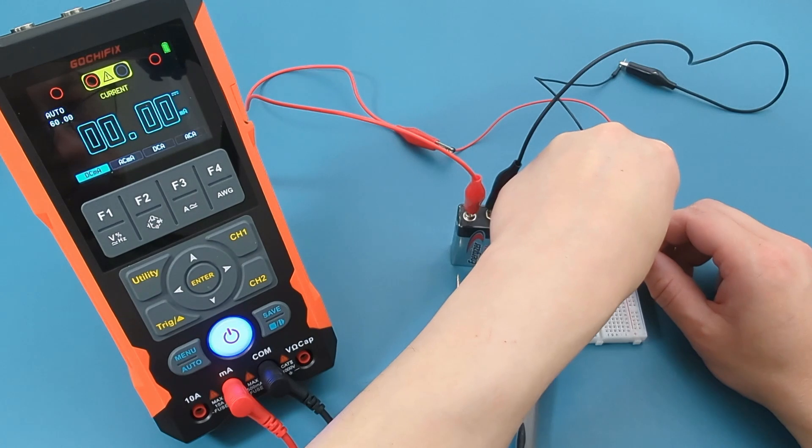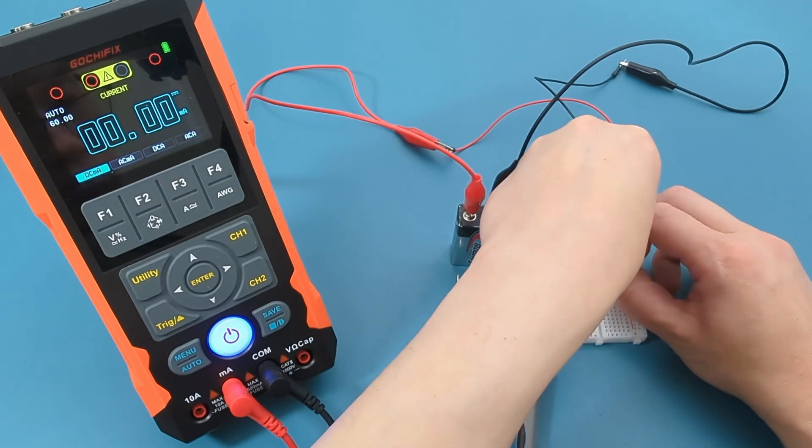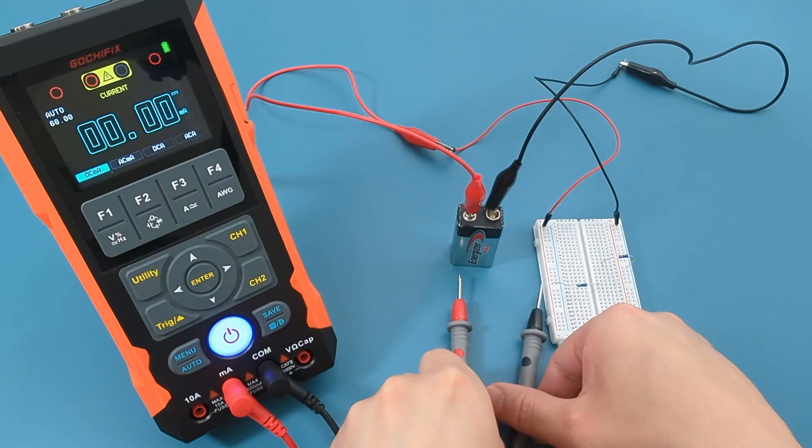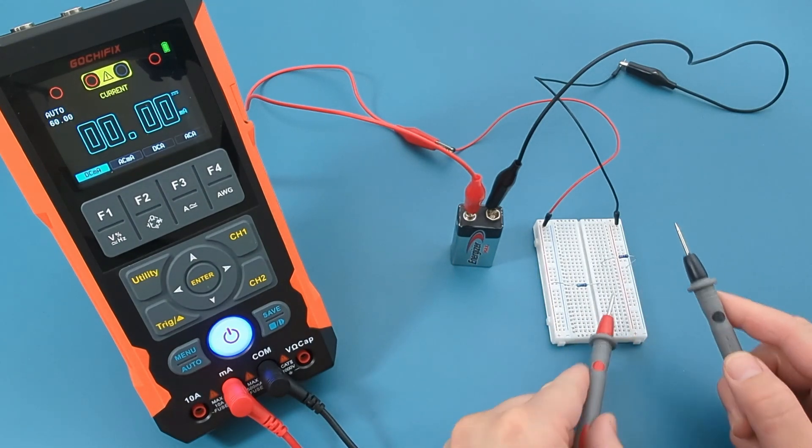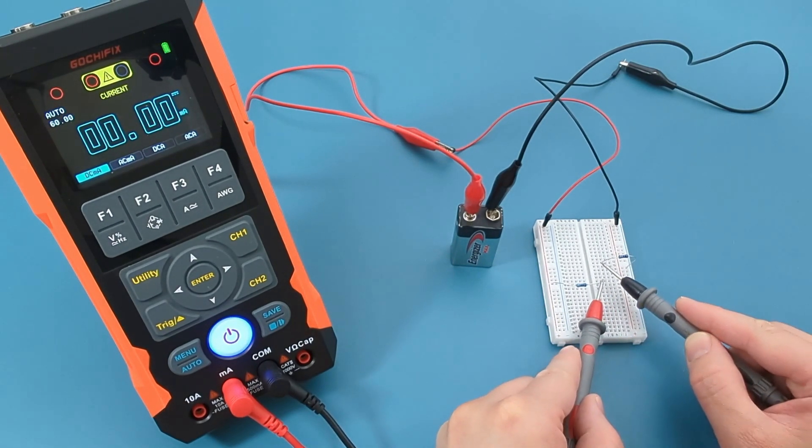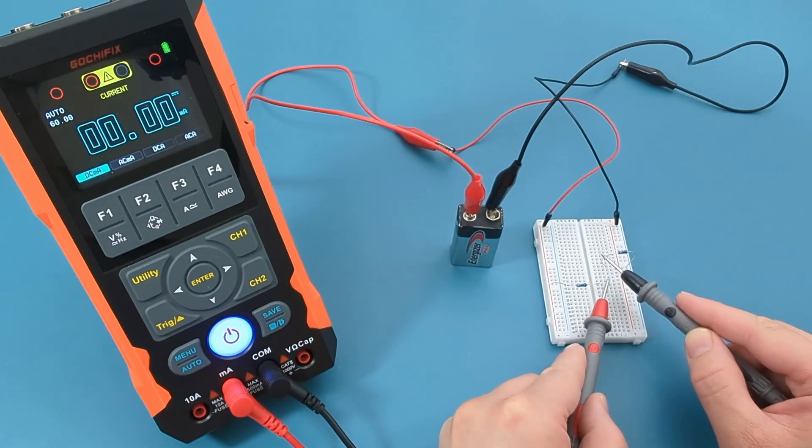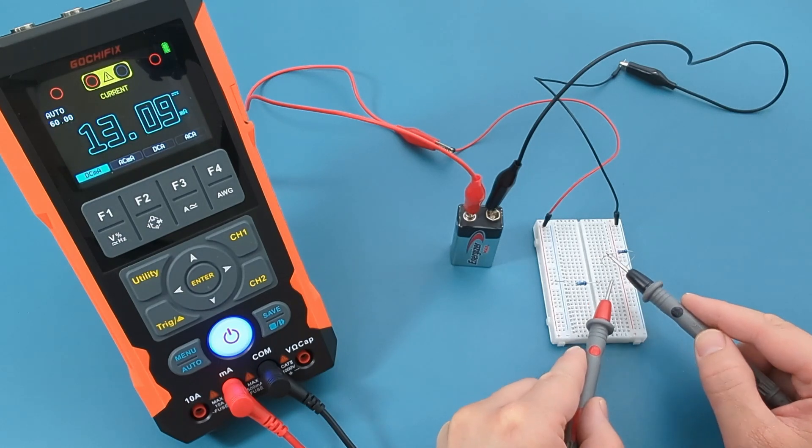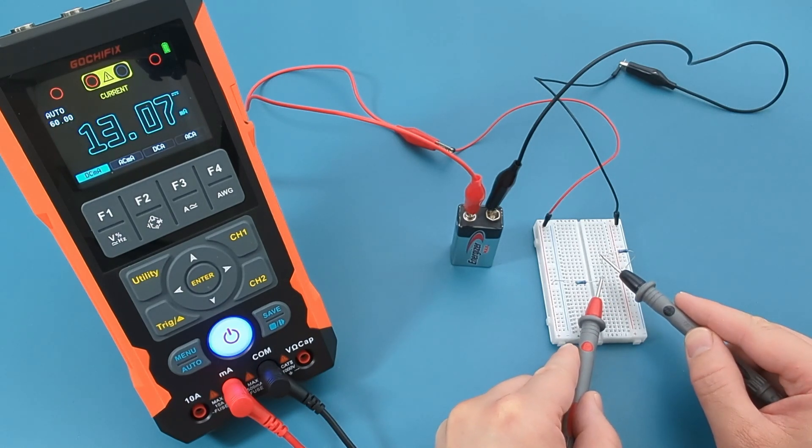Touch the red probe to the right resistor wire of R1. Touch the black probe to the left resistor wire of R2. The reading shows around 13 milliamps, which is what we expected.